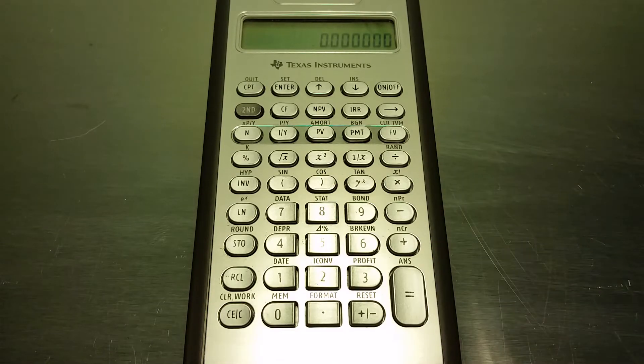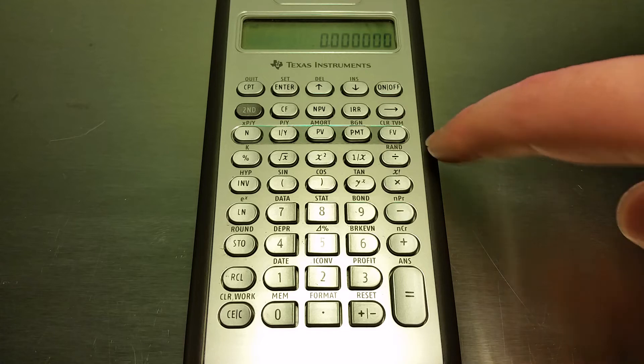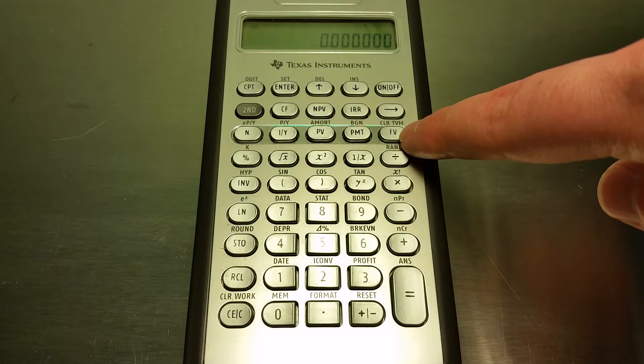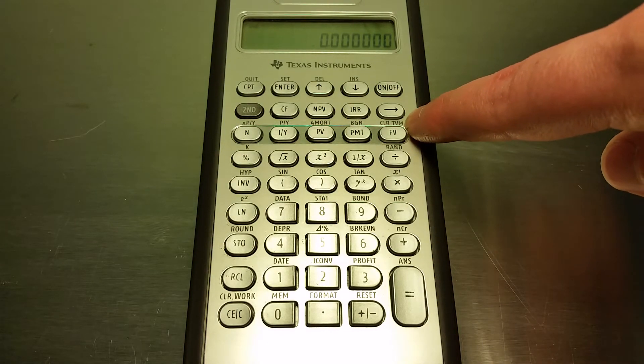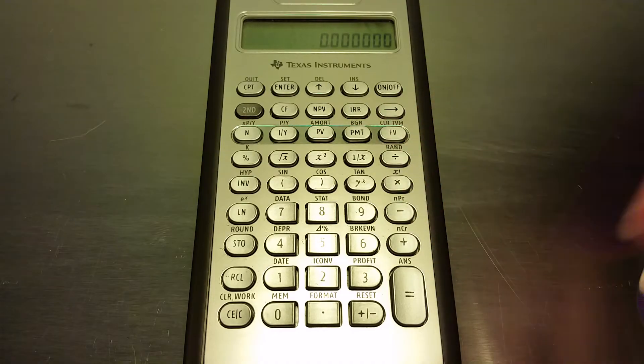Now some common mistakes that people make, especially when they're first starting out and entering in calculations, is they forget to clear out their calculator before making a new calculation. This should just be something that you learn to do before making any new calculation. You should click second and then click the future value button, which is going to clear out the time value of money and reset things so that you're ready to go for a new problem.